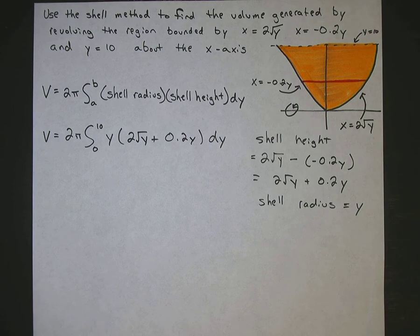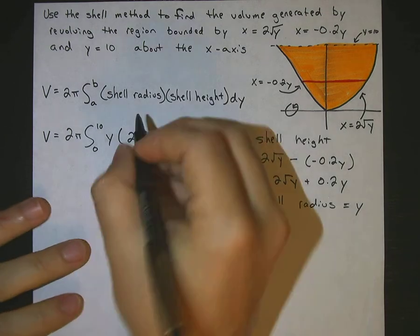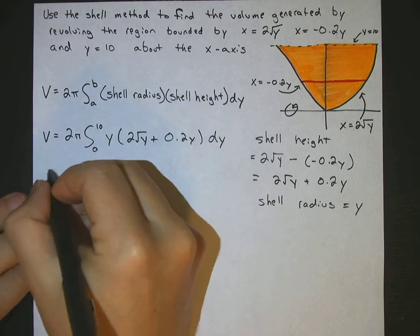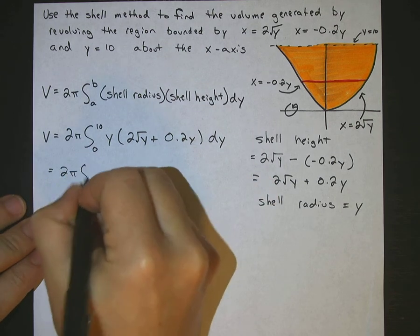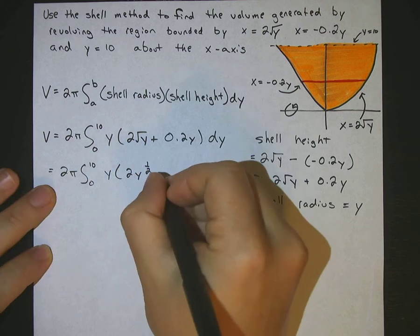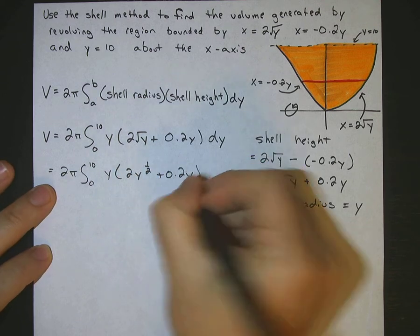I'm going to go ahead and work on this integral. First of all, change this to y to the 1 half. So that's 2 pi 0 to 10 y times 2y to the 1 half plus 0.2y dy.